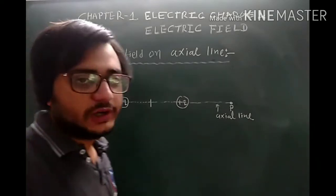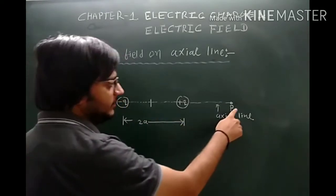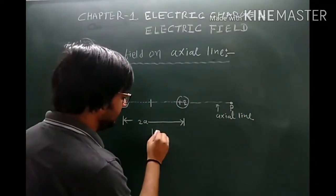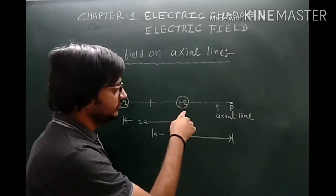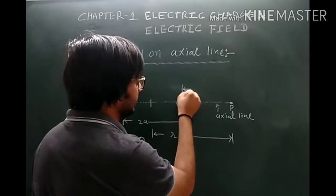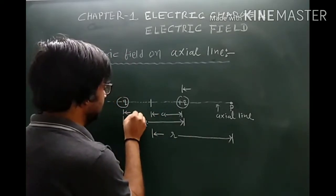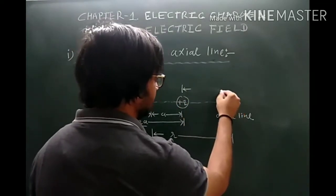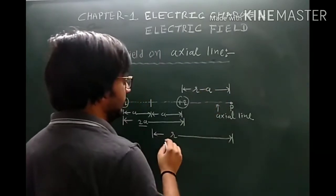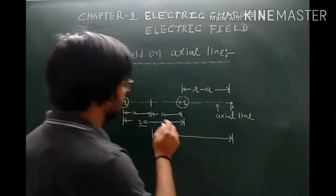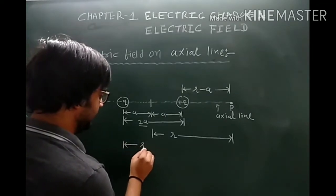The distance between the two electric charges is 2A, and the point P is at distance R from the center of the dipole. The distance between the plus Q charge and point P is R minus A. The distance between the minus Q charge and point P is R plus A.